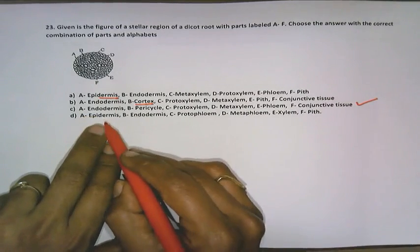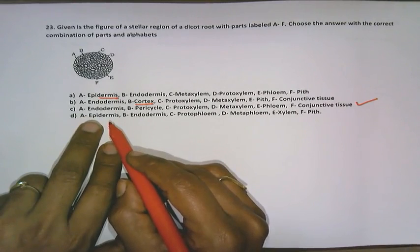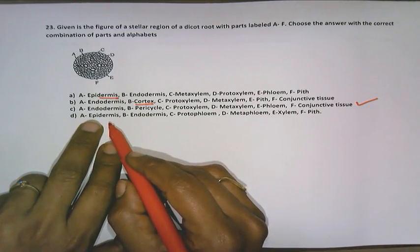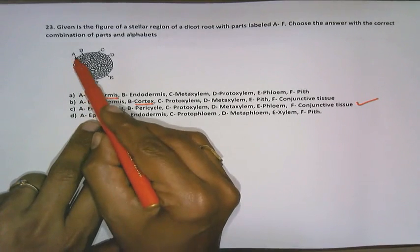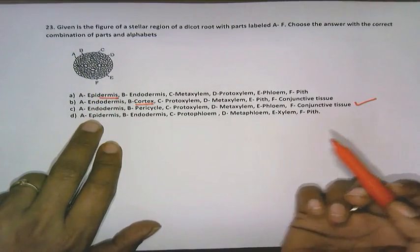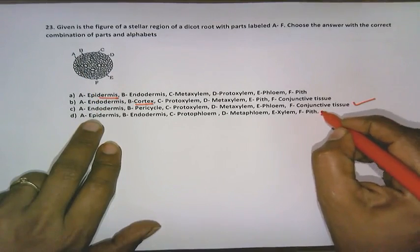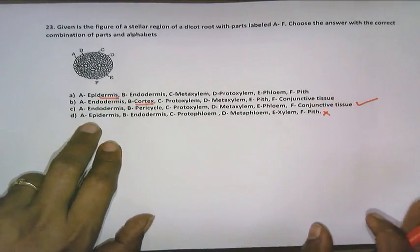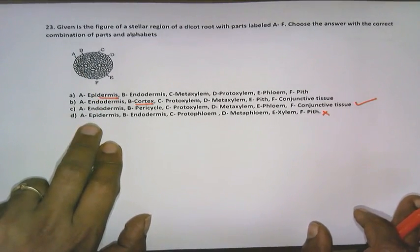But still let us see option D. In option D, what we have to see is epidermis and endodermis. Epidermis is A and B is endodermis. Then where is the cortex gone? So because of which option D also is wrong. So our answer is option C, students.